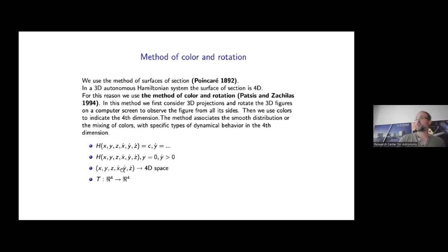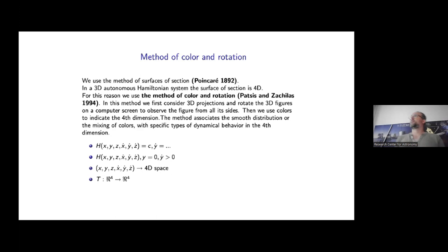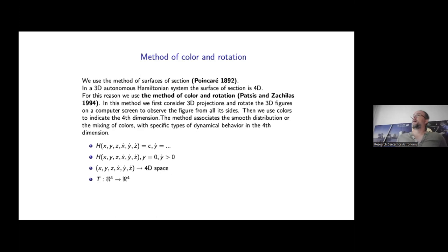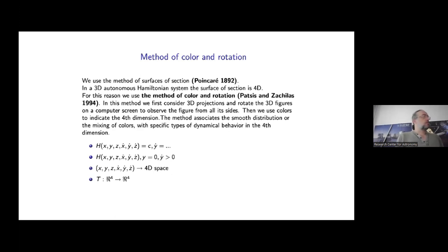The six-dimensional phase space corresponds to this four-dimensional space of section. By this way we define a Poincaré map that is a symplectic map and is four-dimensional in this case. In order to visualize the phase space, we use the method of color rotation. In this method we consider three-dimensional projections of the space of section, rotate this figure in order to see it from all sides, and indicate the fourth dimension using color. Smooth color variation corresponds to regular behavior, while mixing of colors indicates chaotic behavior in the fourth dimension.